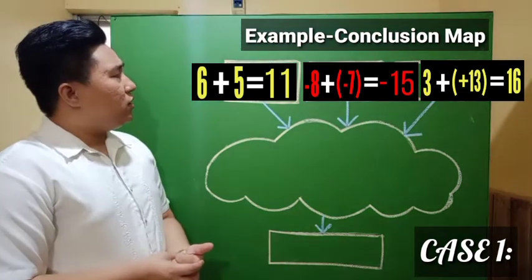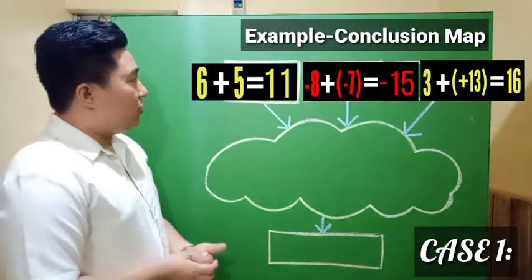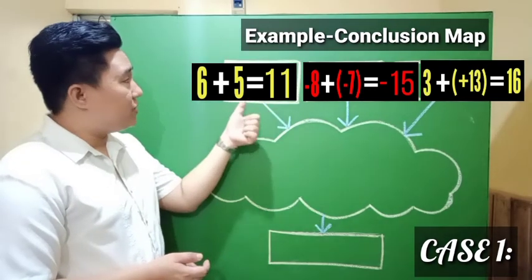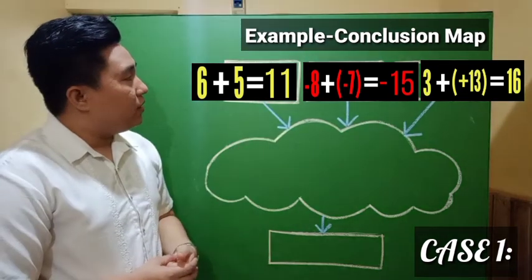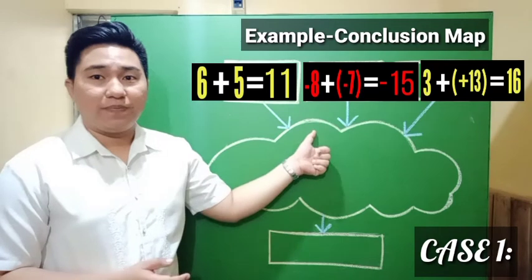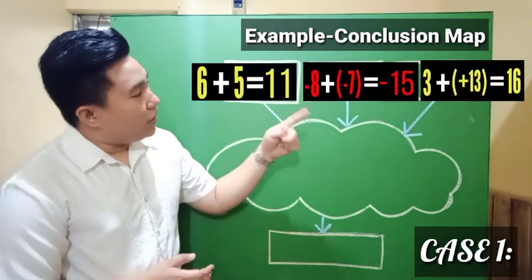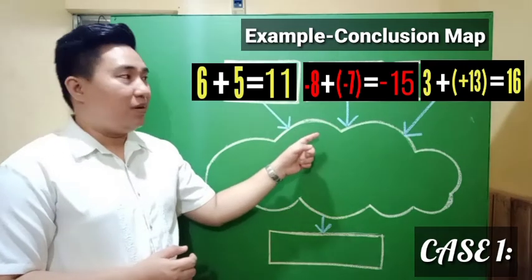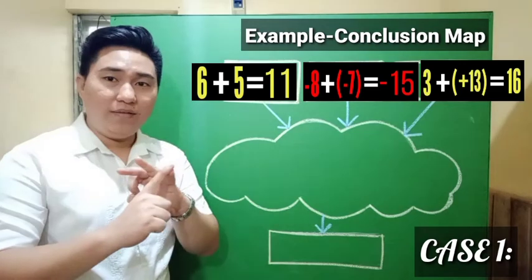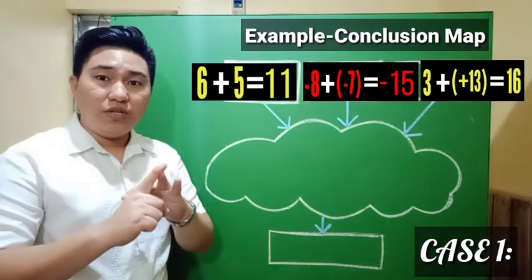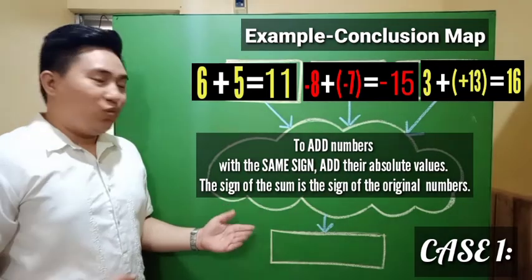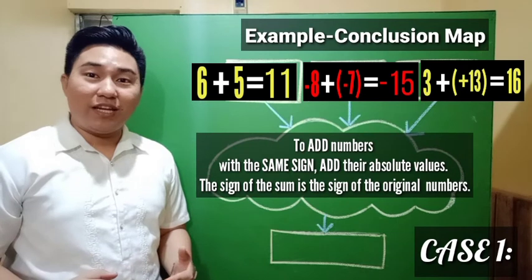How about the sign for each result? For example one, a positive added to a positive gives a positive — yellow plus yellow is yellow. For example two, a negative added to a negative gives a negative — red plus red is red. For example three, same as example one — yellow plus yellow is yellow. Observation three: the sign of the result is the same as the sign of the two given numbers. So for numbers with the same sign, we add their absolute values, and the sign of the sum is the sign of the original numbers.